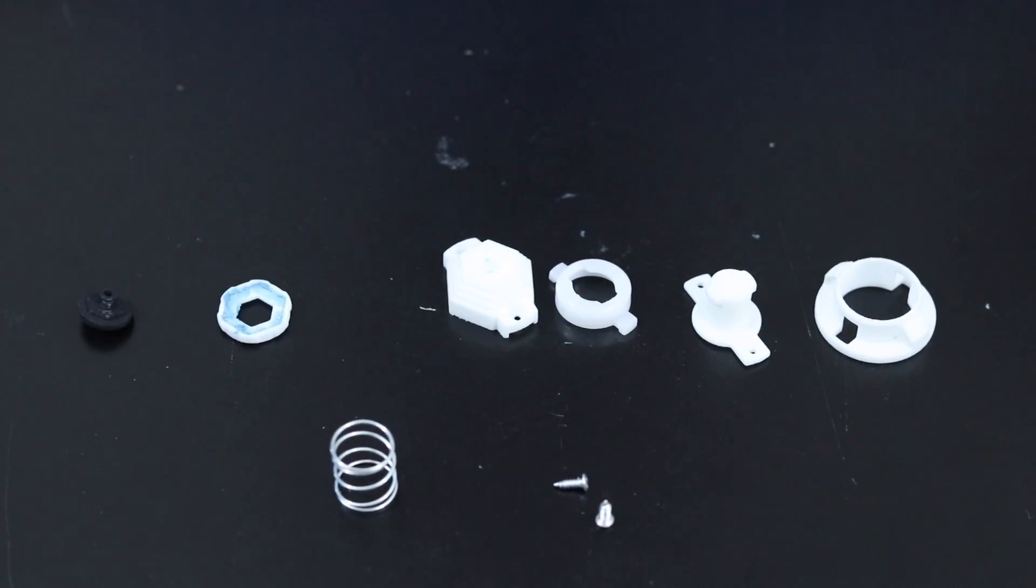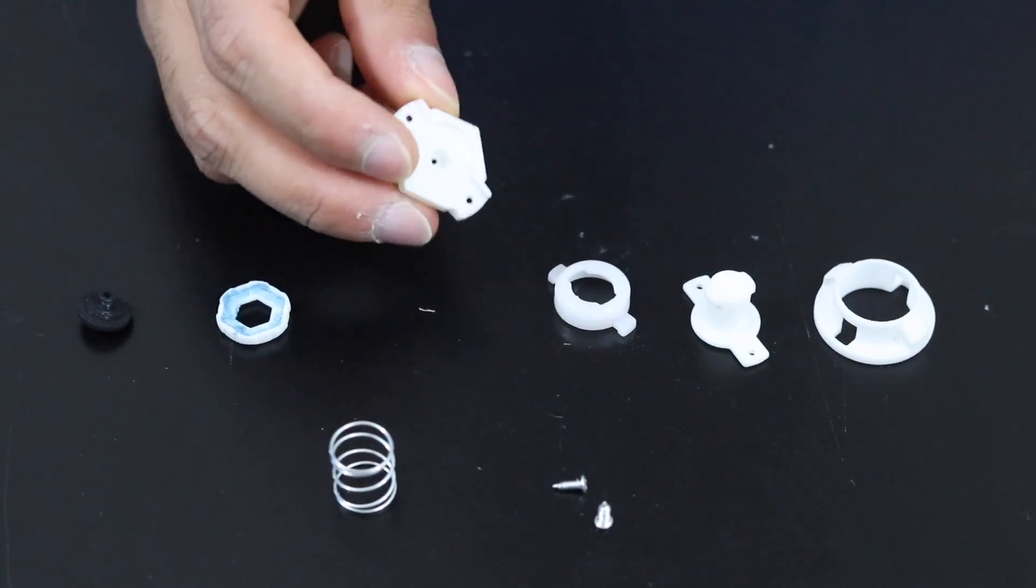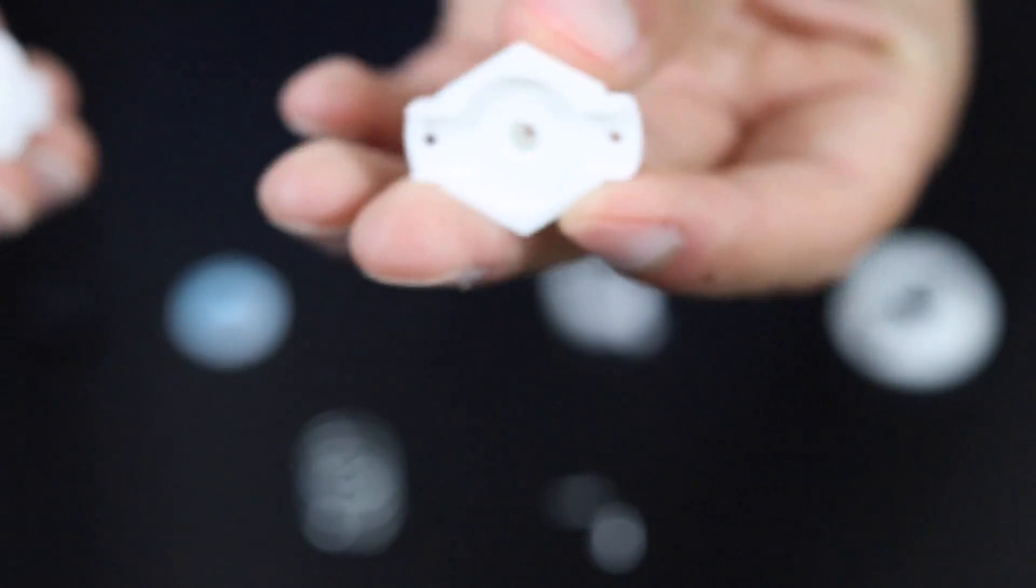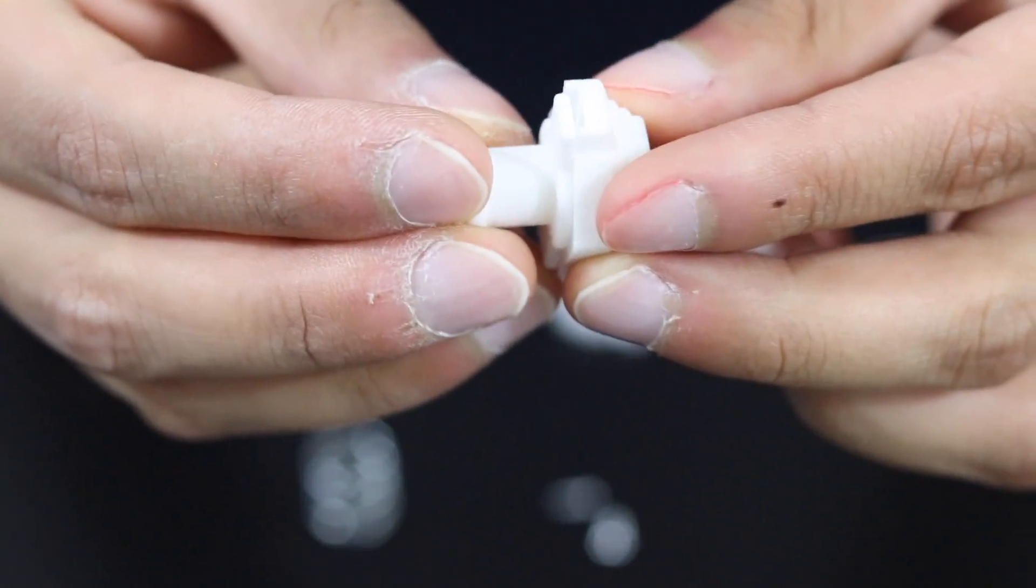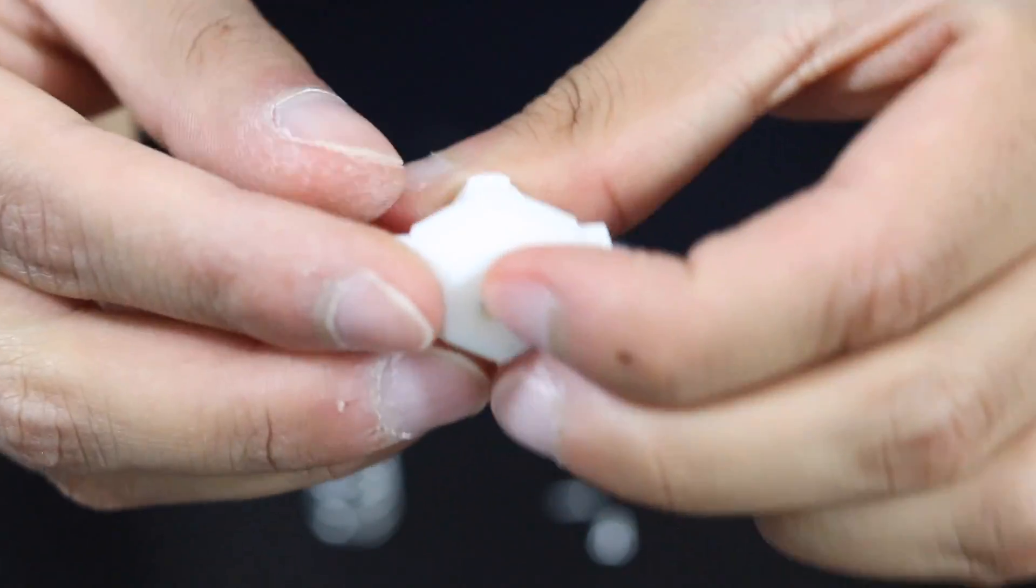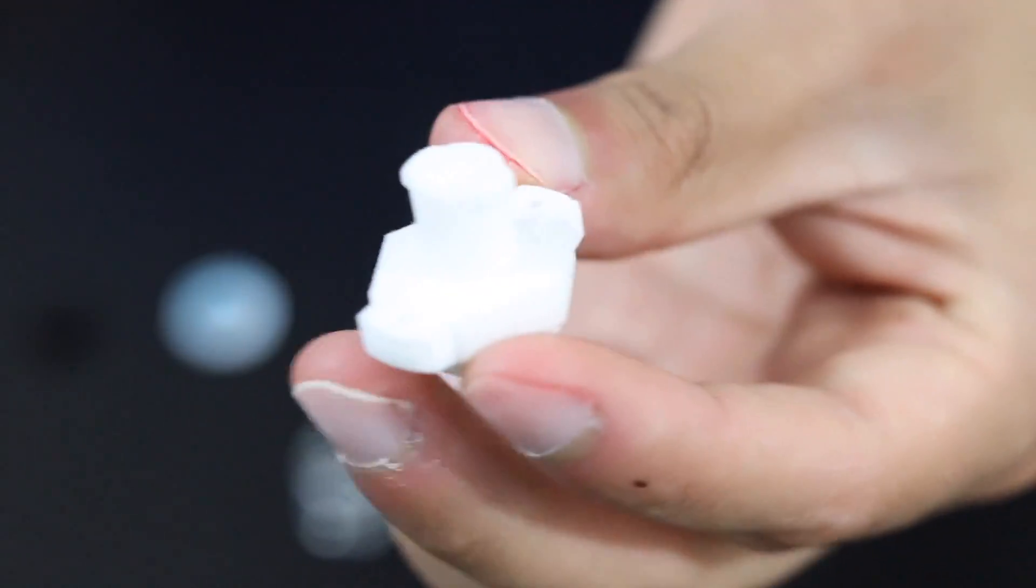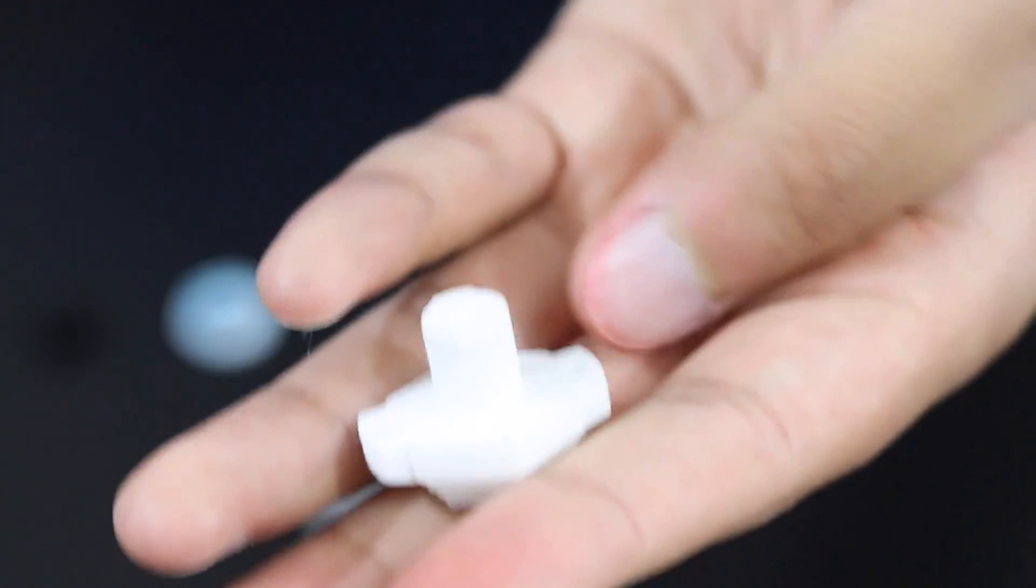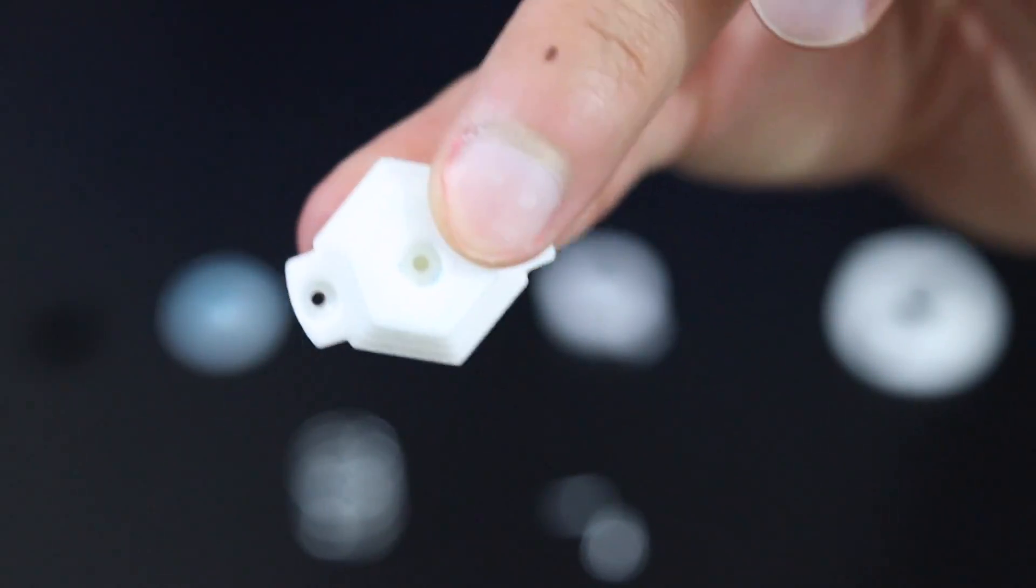We're going to start step by step. The first thing you're going to want to do is get the base right here, or part of the base, and this component. It actually has a spot that you can put together, so it should just click in place depending on how it's printed. I use Shapeways, which is pretty precise, so it just clicked in place and now you got this two-piece thing.